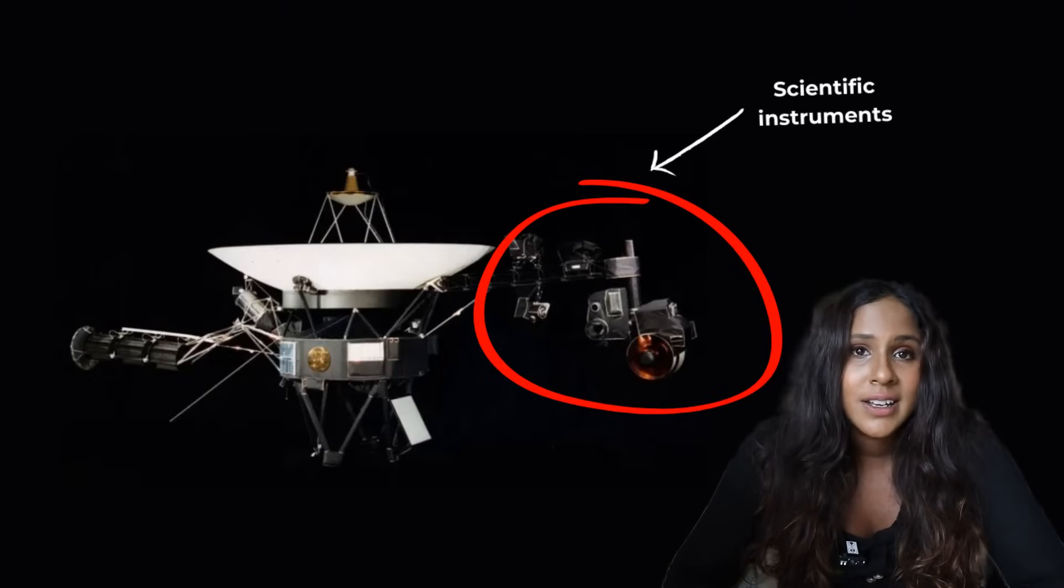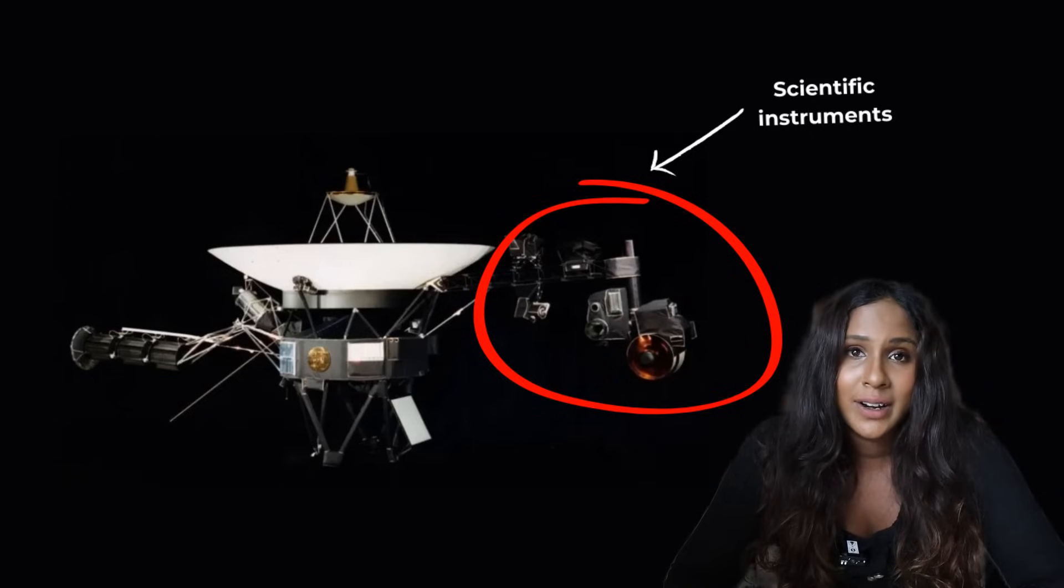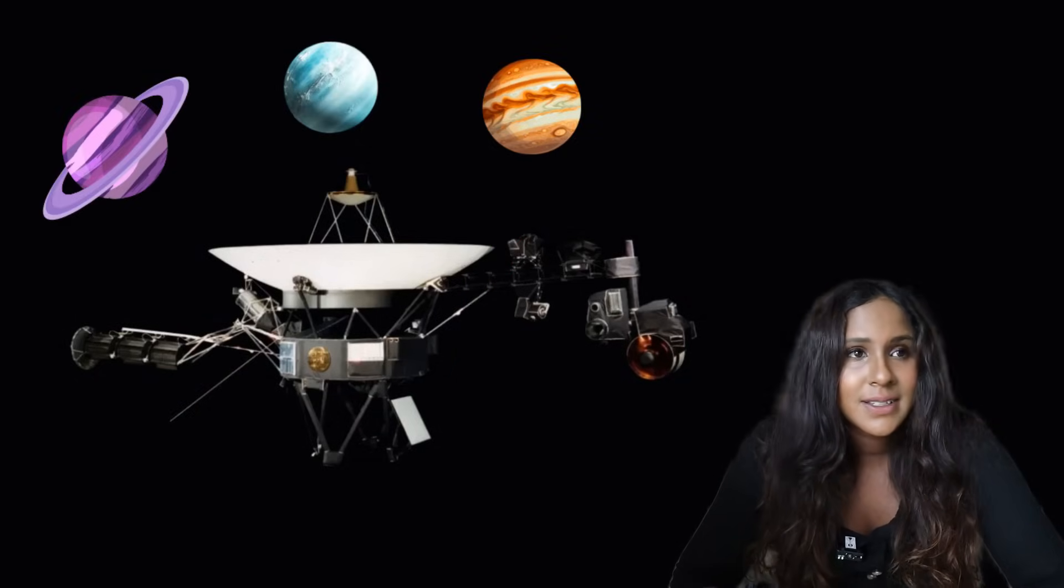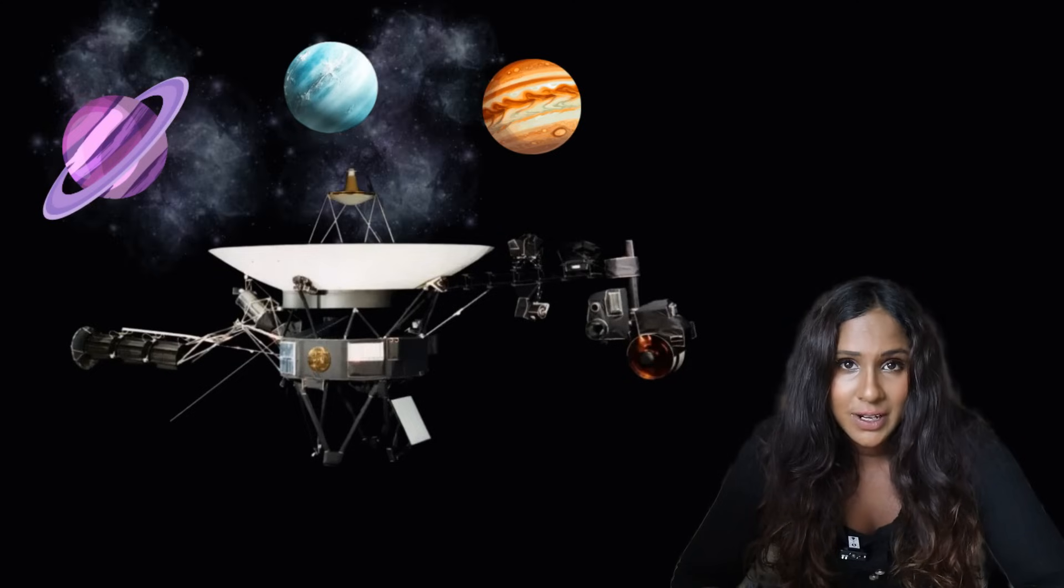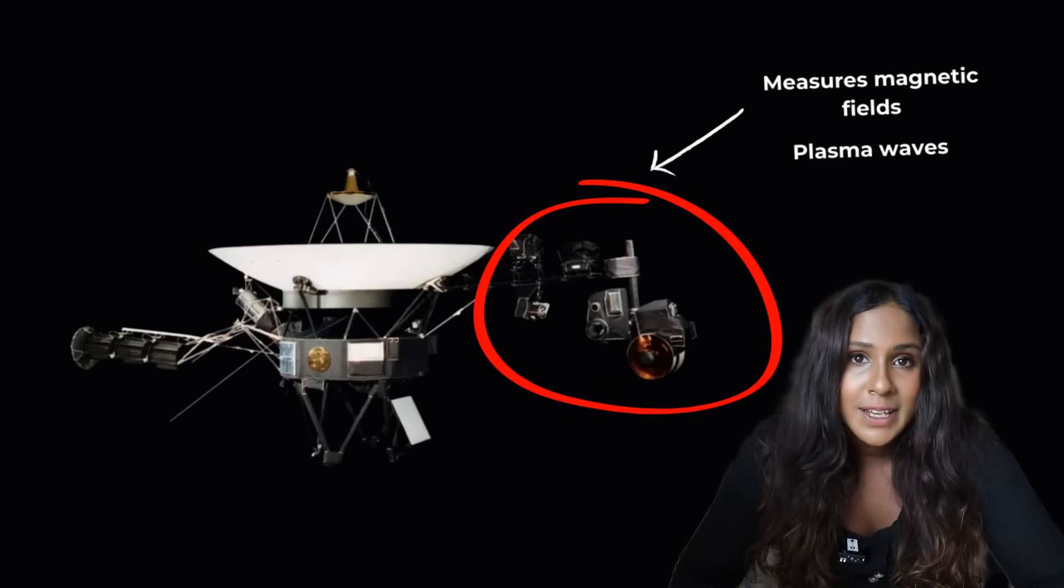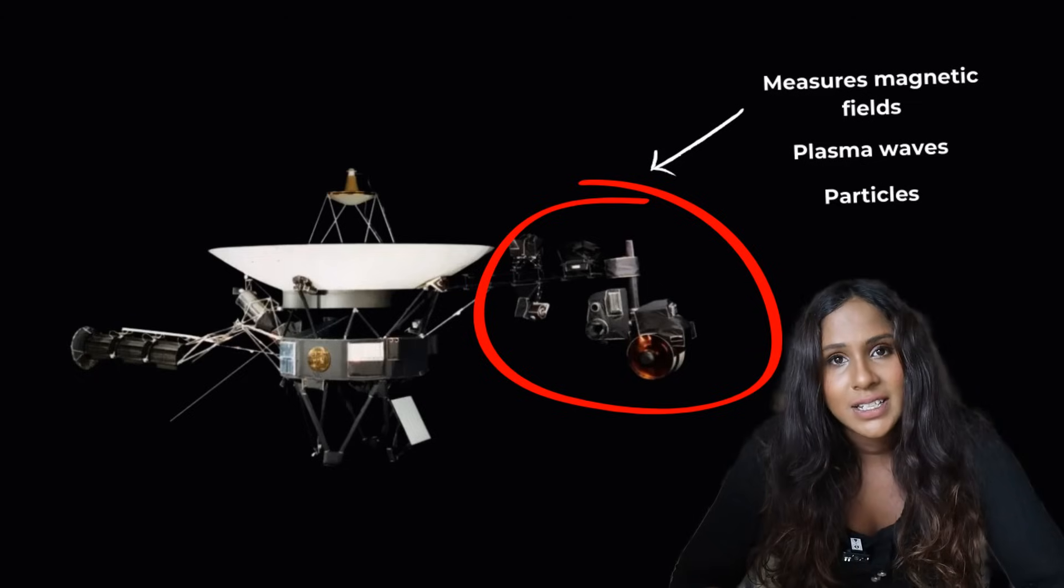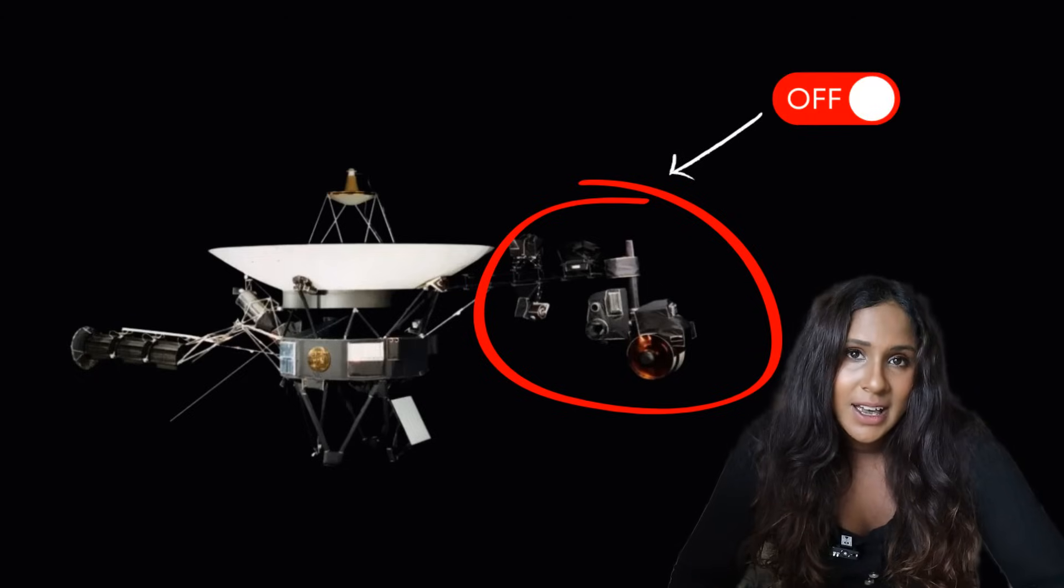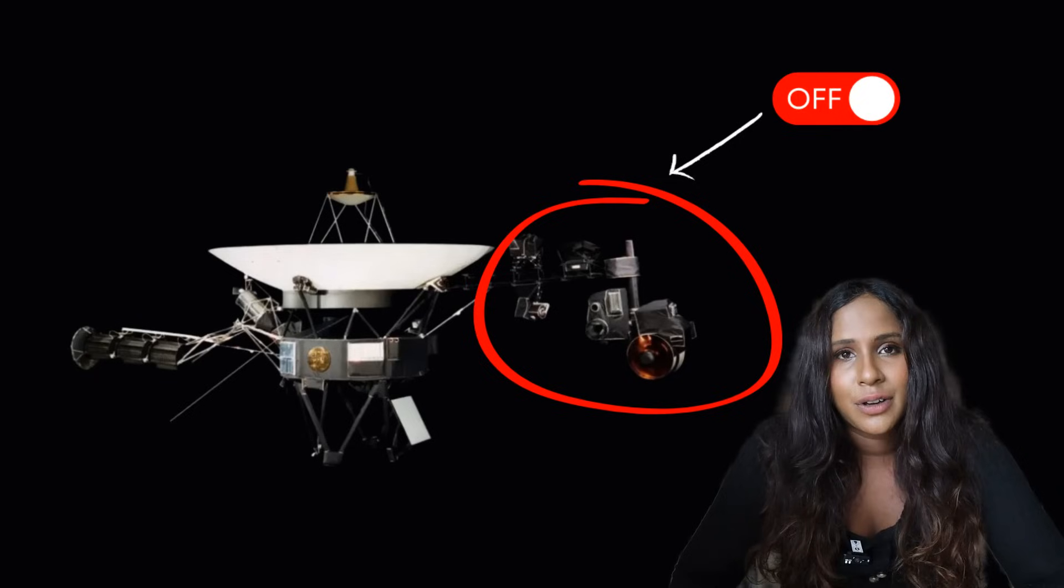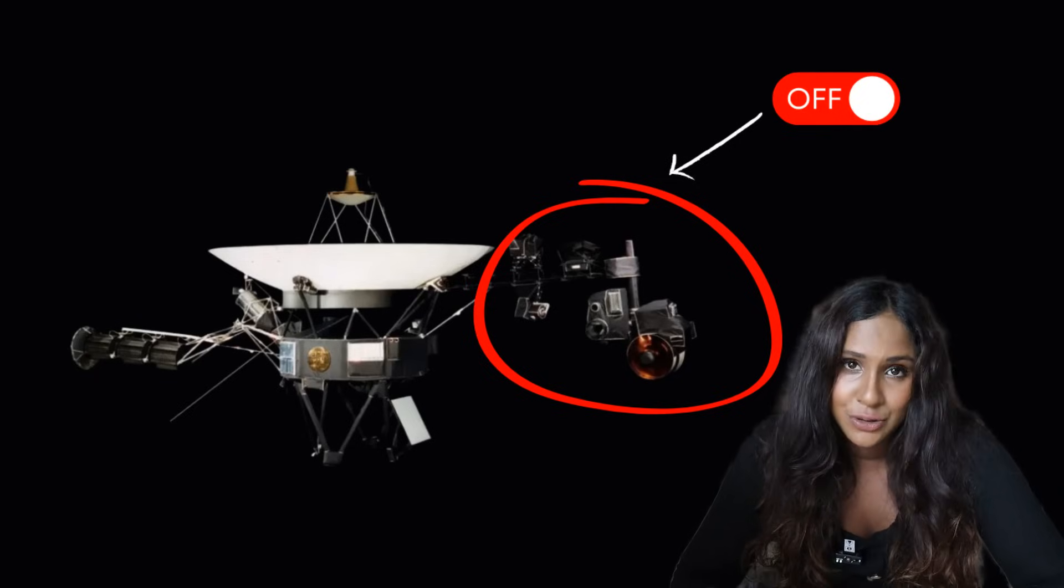You also get the various scientific instruments that Voyager 1 carries, mainly because Voyager 1 was built to study planets, space weather, and cosmic radiation. So it does have instruments to measure magnetic fields, plasma waves, and even interstellar particles. A lot of this gear has been turned off over time to save some power, but there are still a few sensors that are being used today.